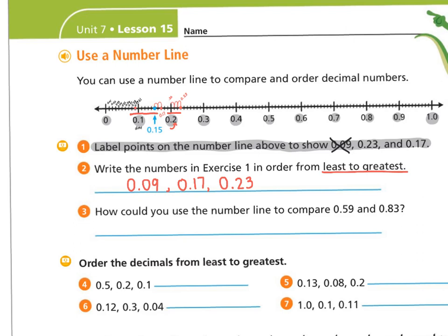Number three says how could you use the number line to compare fifty-nine hundredths and eighty-three hundredths? If I were to put those on the number line, I would put fifty-nine hundredths here and eighty-three hundredths here. Write one comparison sentence comparing fifty-nine hundredths and eighty-three hundredths. Pause the video and do that now.